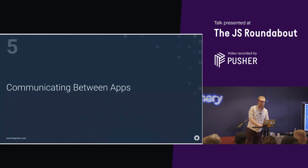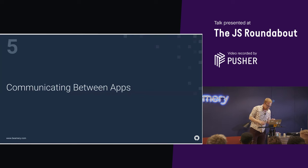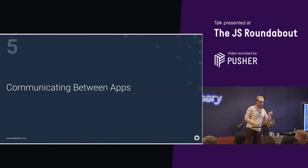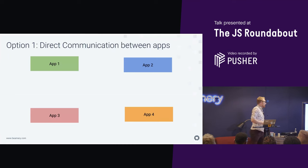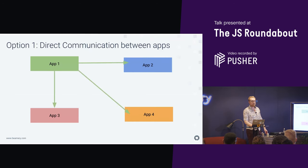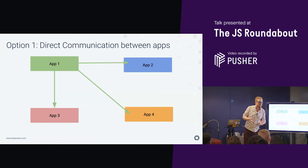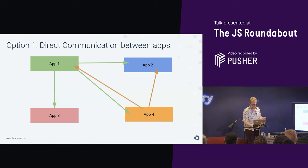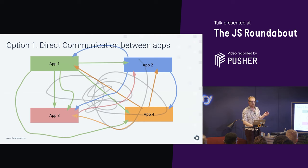I want to talk about communicating between apps — the question everyone always asks. How do these apps actually talk to each other? You've got all these apps running side by side in the DOM, and sometimes they do need to share data — which thing to highlight, passing an object from one to another. The first thing we wanted to avoid was direct communication between apps. You could just have apps call methods on each other since they're all in the global namespace. This works, but you start creating dependencies, and pretty soon you have a spider's web — a bad structure.